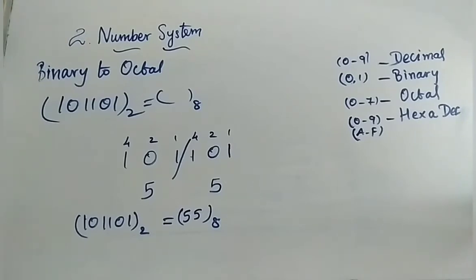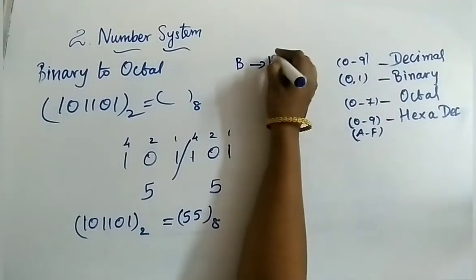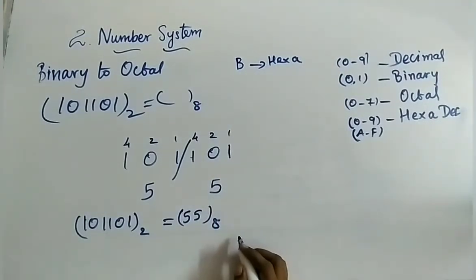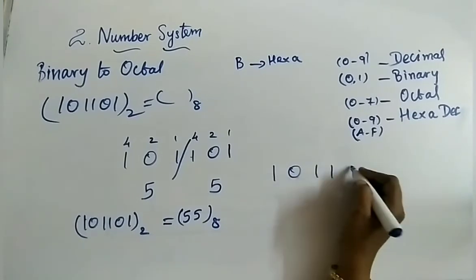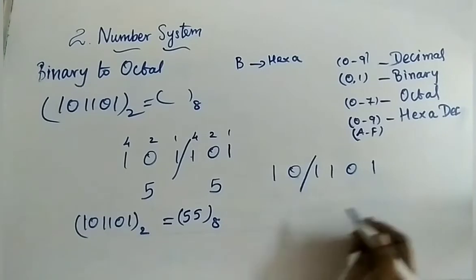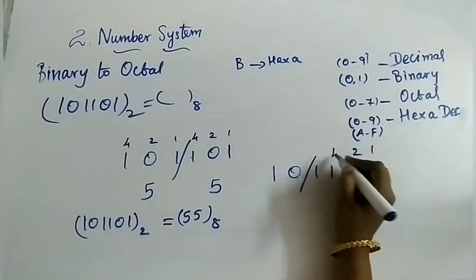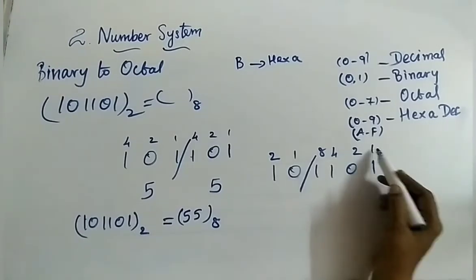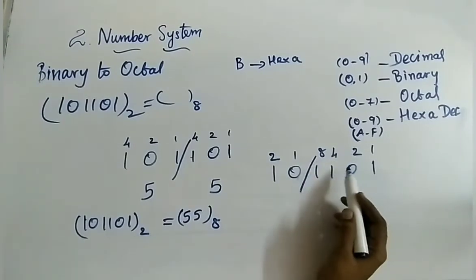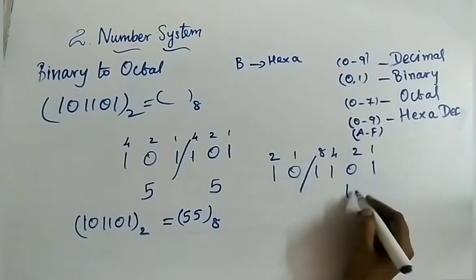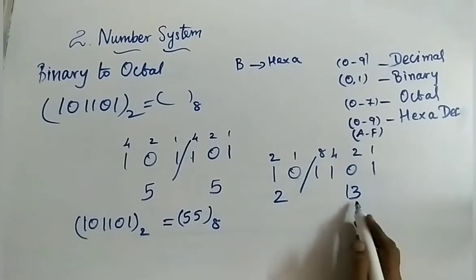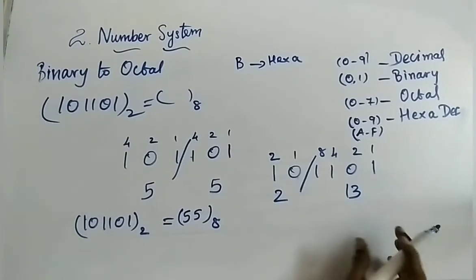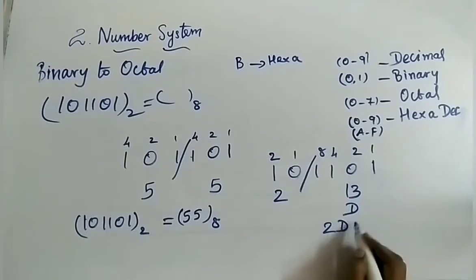Next model: binary to hexadecimal. Same number, 101101 to the base 2. Here you split into groups of four and write 8-4-2-1 on top. First group: 0010 gives 2. Second group: 1101 gives 8+4+1=13, and for 13 you write D. So the answer is 2D to the base 16.